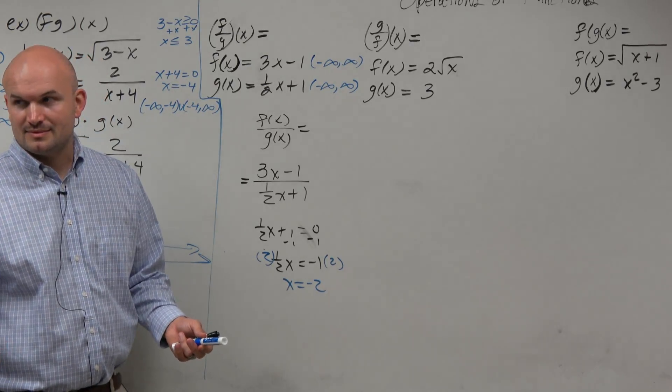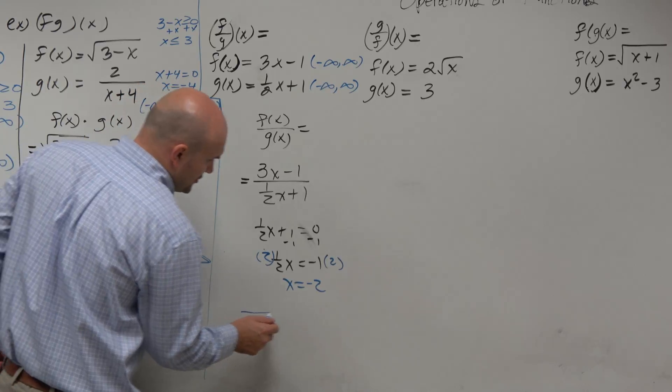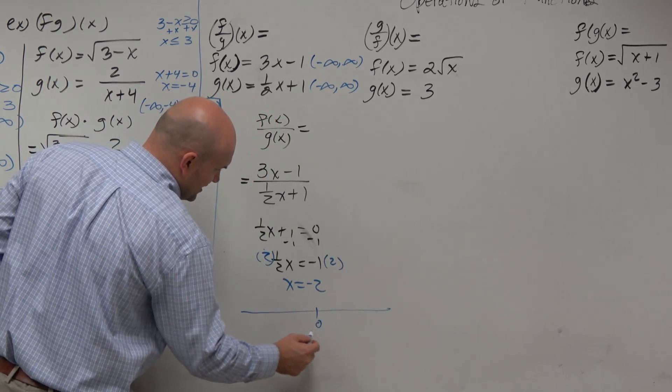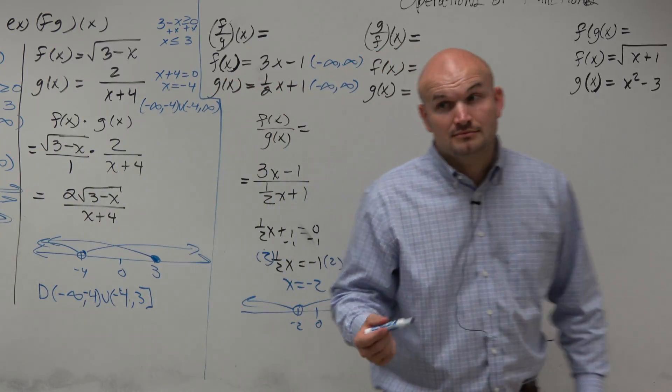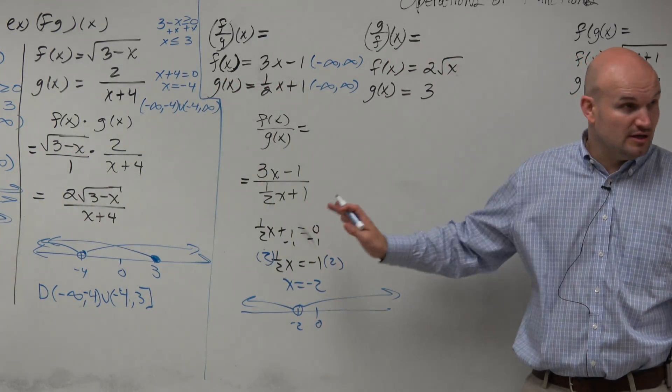So the graph. All real numbers except for negative 2. Could look like that. Right? All real numbers except for negative 2.